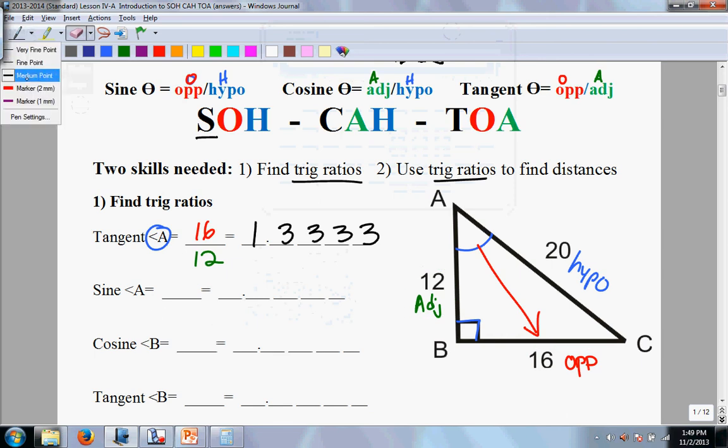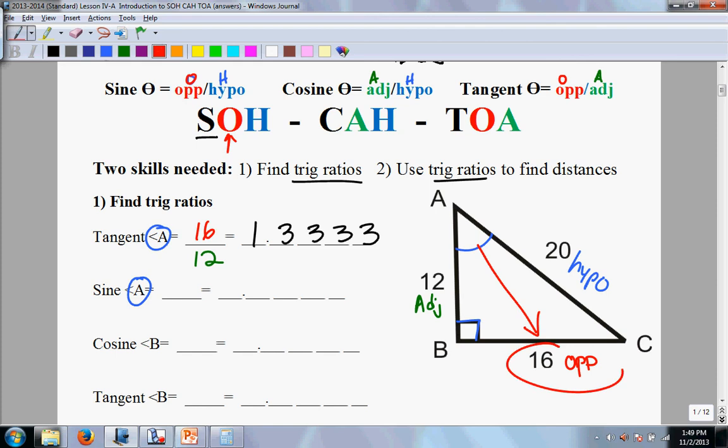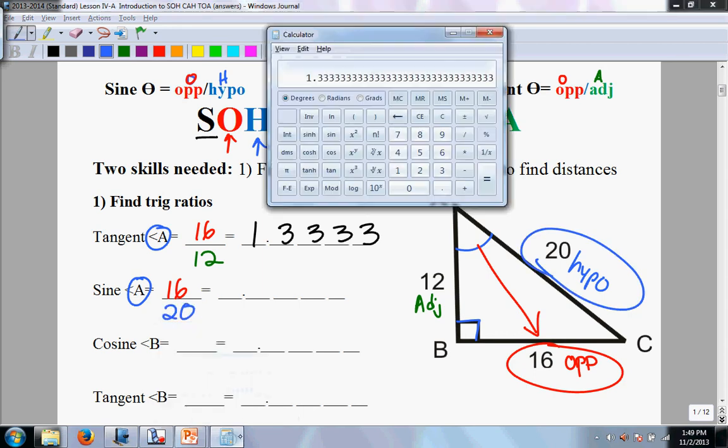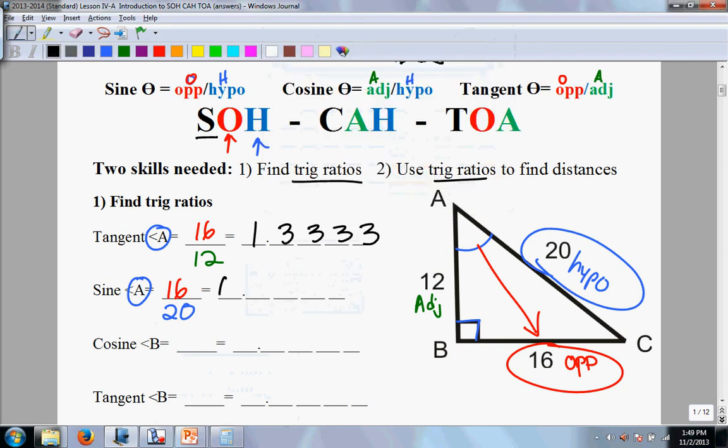Still using angle A, we're still on angle A, so my opposite, adjacent, and hypo remain the same. Now I'm going to do sine. Sine is opposite, so in this case our opposite is still 16, but now we're going to go over the hypo, which in this case is 20. So the sine ratio of angle A is simply 16 divided by 20, which is 0.800.